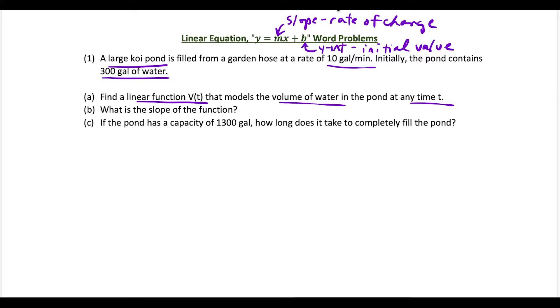Now what we're going to do is define each term. We're told the rate is 10 gallons per minute, so our slope m equals 10. And the pond initially contains 300 gallons of water. That's the initial value, so our b value equals 300.